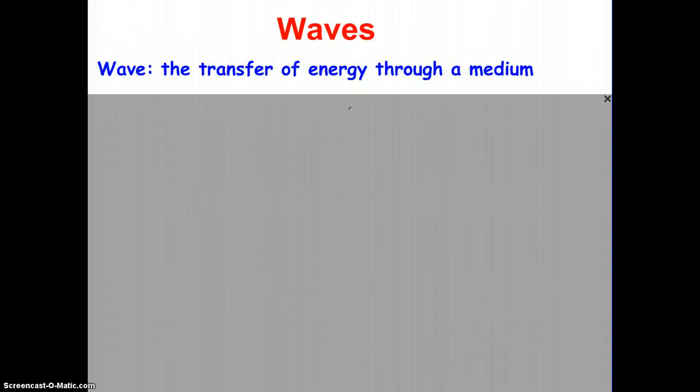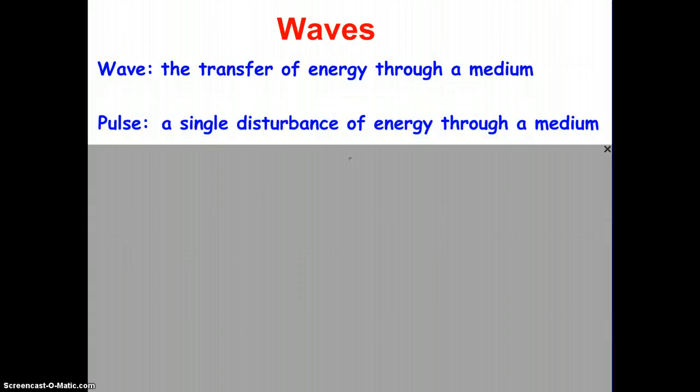A wave is a transfer of energy through a medium. Simply stated. And a wave is a repeat of a number of pulses. A pulse is a single disturbance of energy through a medium, so a wave is a repeated disturbance of multiple pulses traveling through that medium.